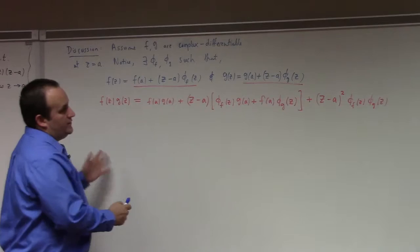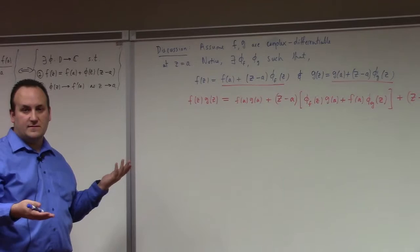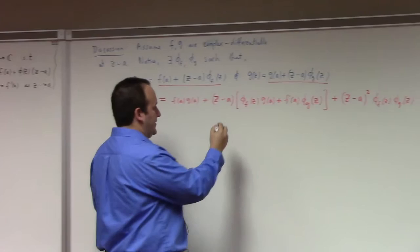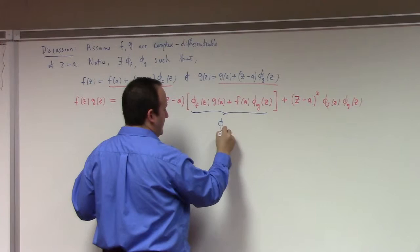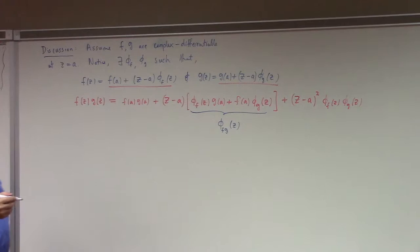The point here is: once you do this calculation it becomes obvious what the derivative of the product should be. The derivative of the product should naturally be this linear piece. So that's our candidate for phi_fg(z).